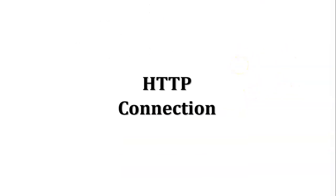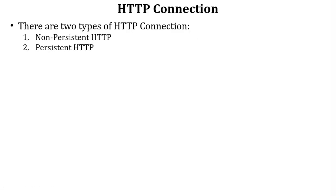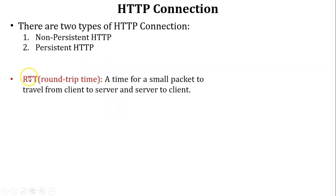Next, HTTP connection. There are two types of HTTP connection: non-persistent HTTP and persistent HTTP. Before discussing the types, I will cover two important terms. The first is RTT, which stands for Round Trip Time. RTT means the time for a small packet to travel from client to server and back from server to client.